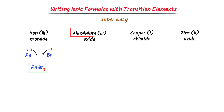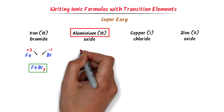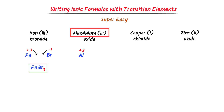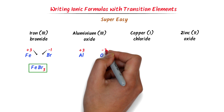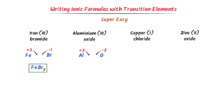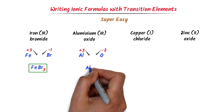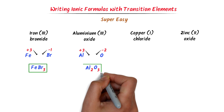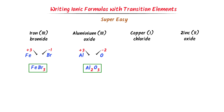Secondly, the 3 with aluminum means the oxidation state of aluminum in this compound is positive 3. Oxygen is present in group 6 elements and its oxidation state is negative 2. I cross their respective charges and I get aluminum 2, oxygen 3 — Al₂O₃. So this is the chemical formula of aluminum oxide.